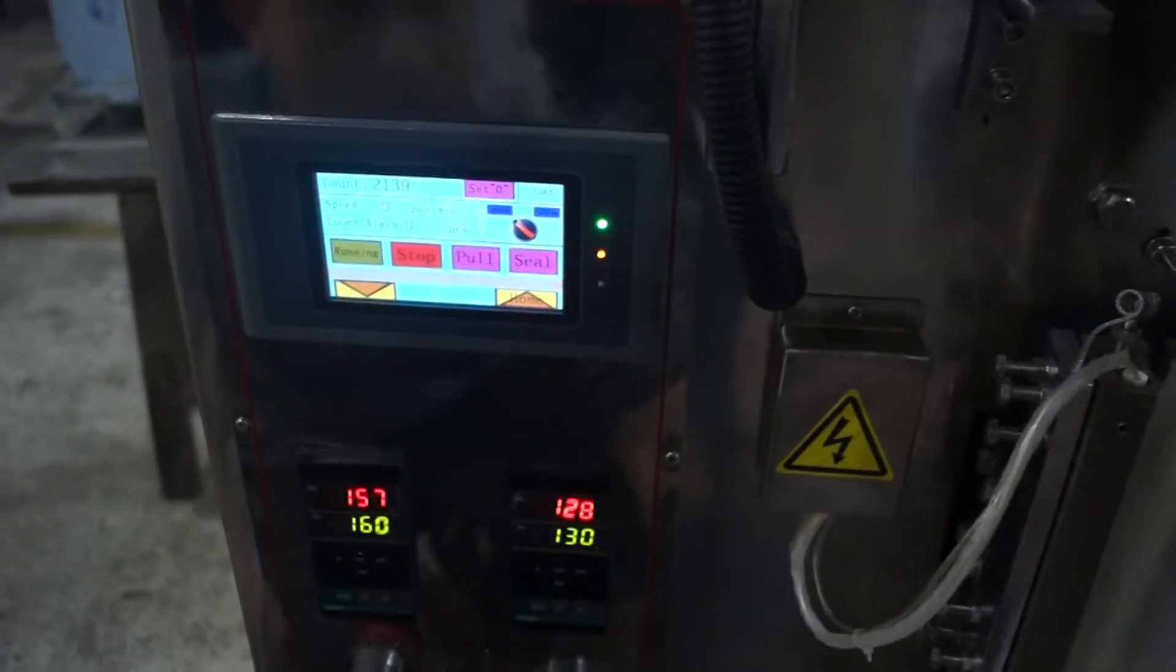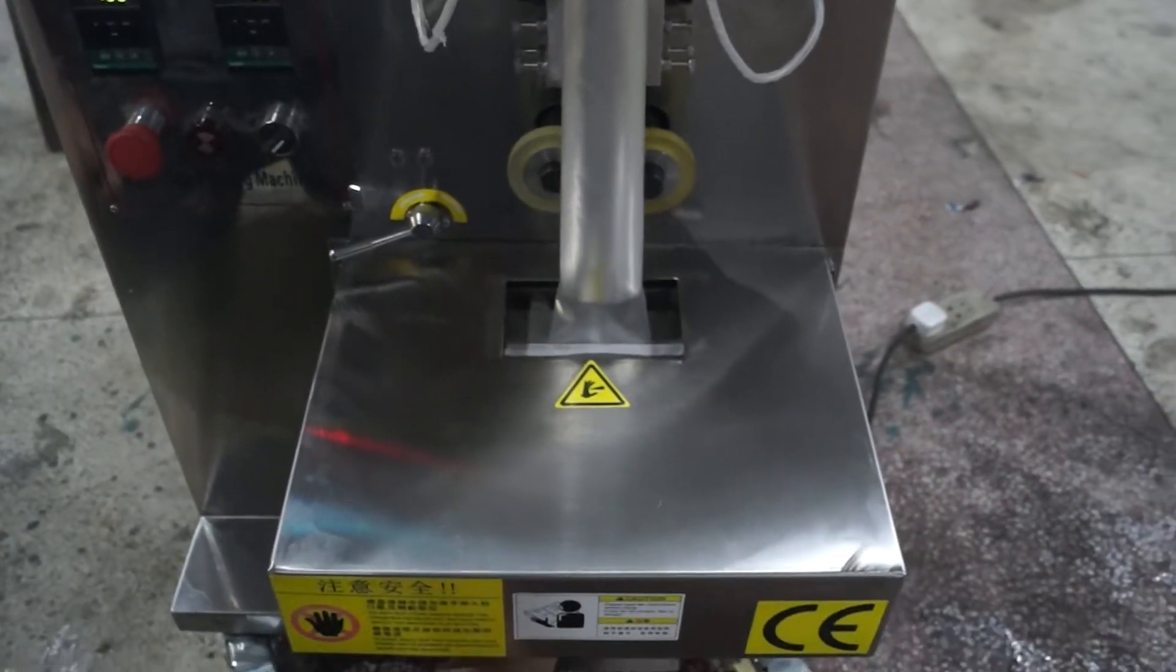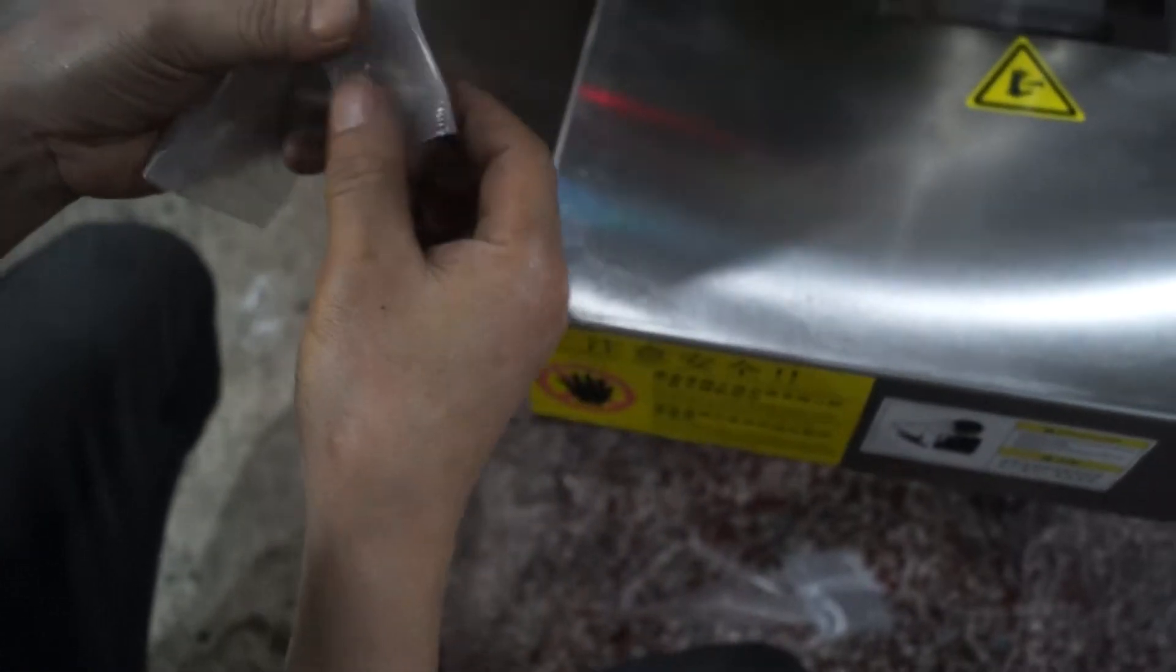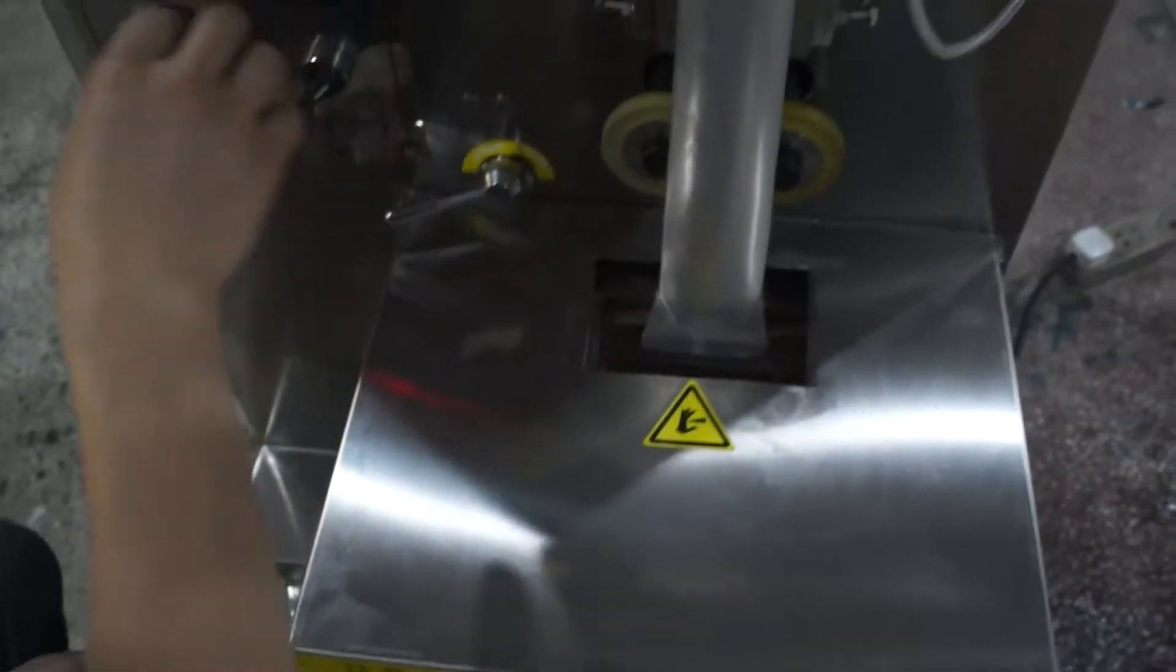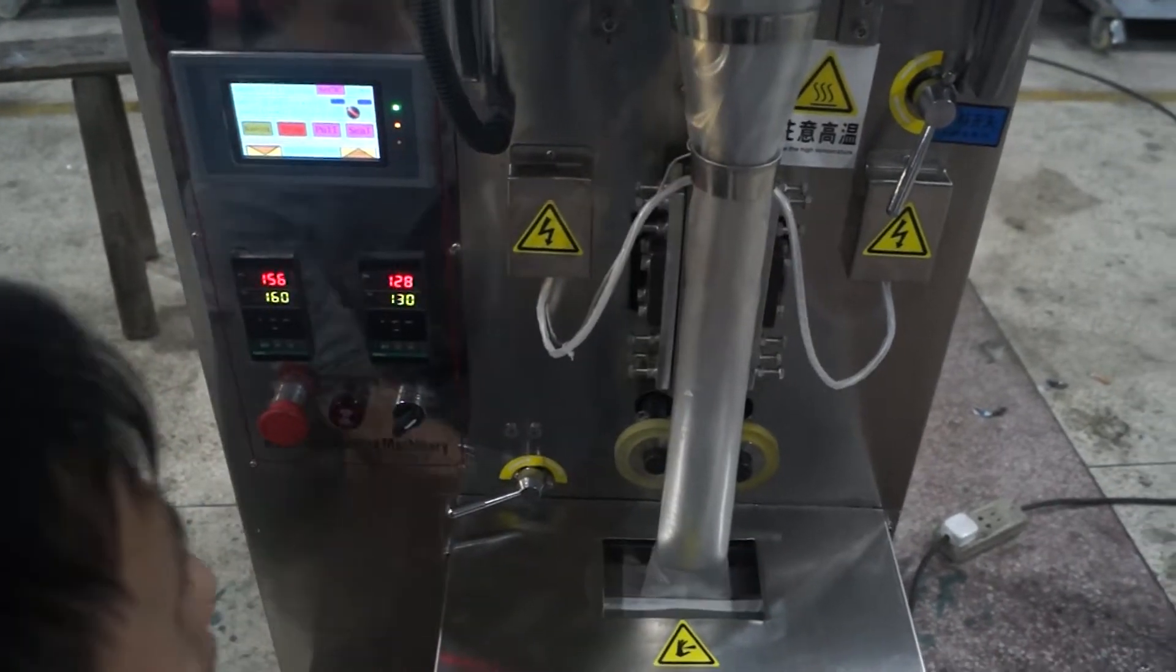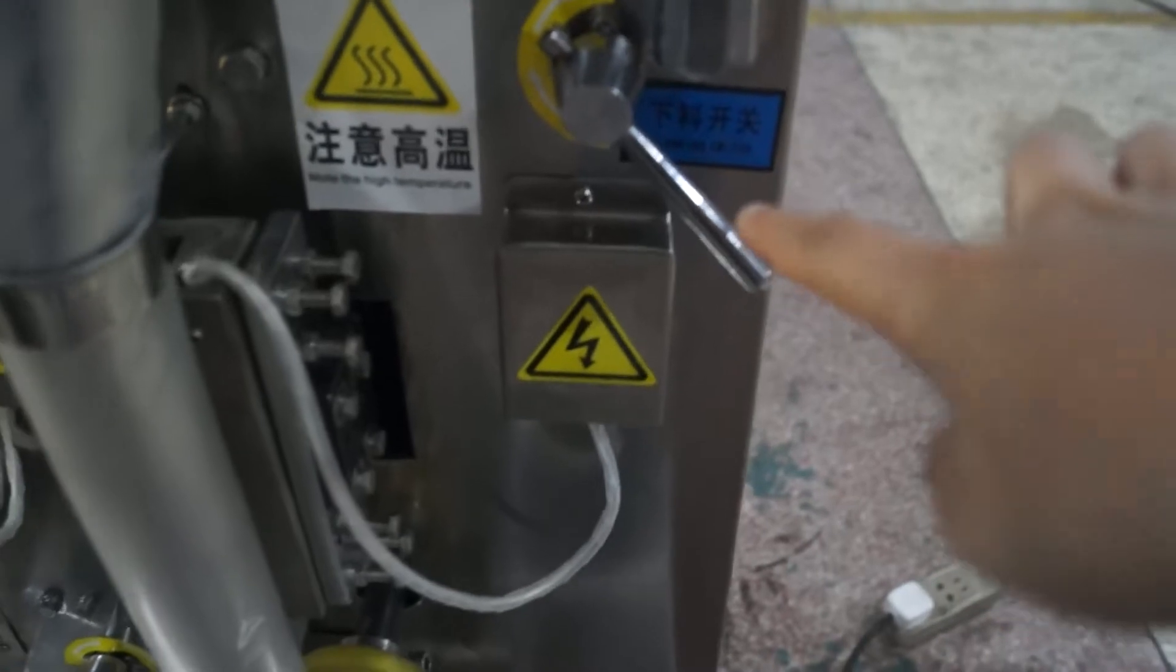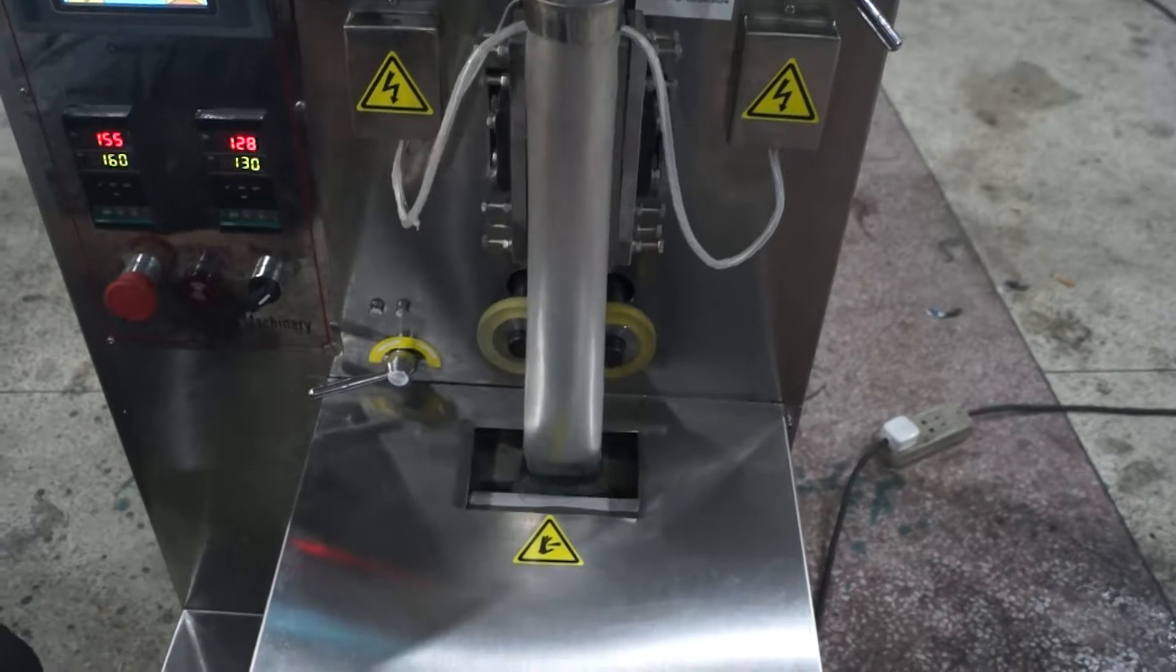Now testing. When the bags seal good, it means your film material is put on correctly. Now turn on the blanket switch. This is the blanket switch. It means your liquid products drop into the bags.